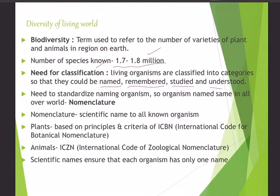Organisms are classified into categories and named through nomenclature, so that a name is standardized and understood worldwide. For plants, the naming follows the principles of ICBN — International Code for Botanical Nomenclature. For animals, we follow ICZN — International Code for Zoological Nomenclature. Scientific names ensure that each organism has only one name.